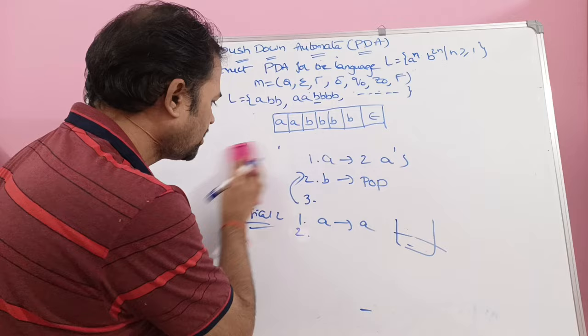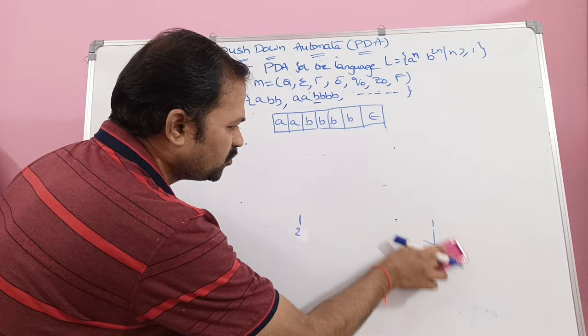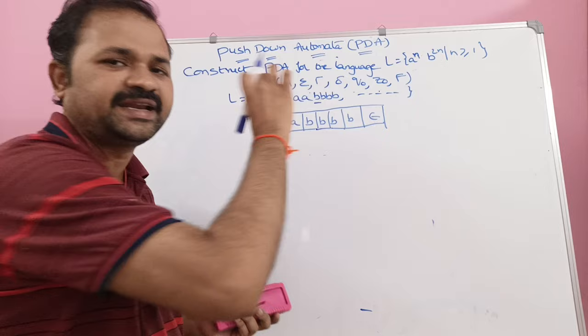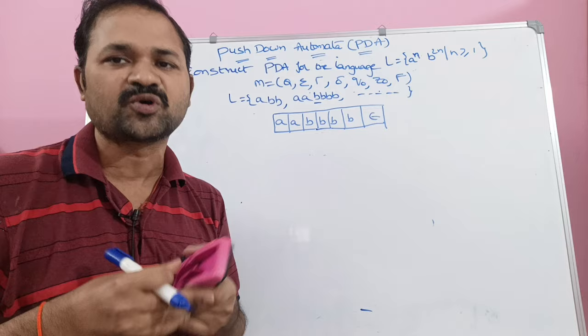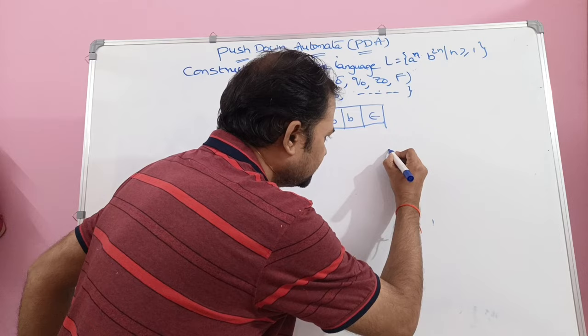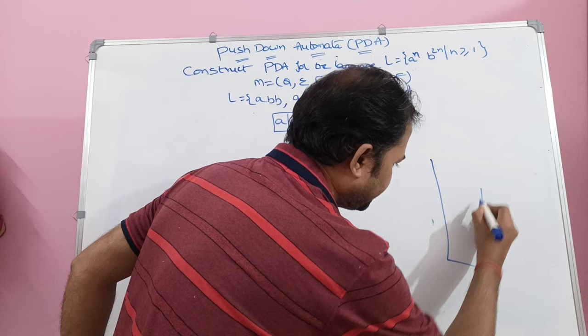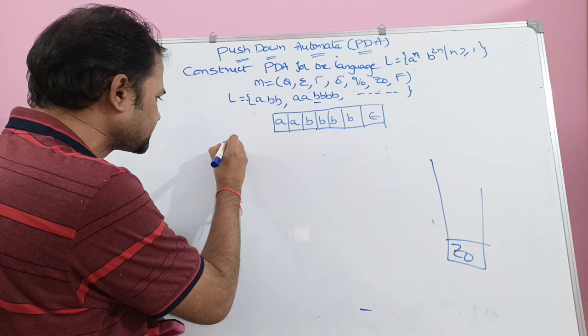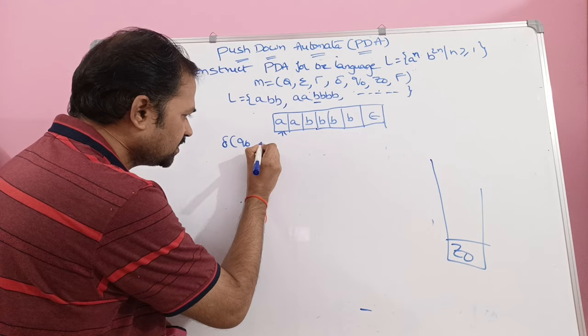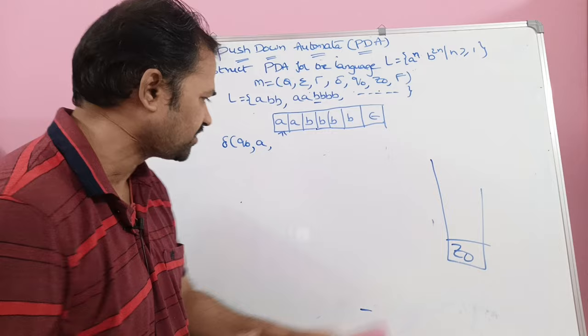Here I am implementing logic 1. Let us take the string aa bbbb. We know that an input string ends with epsilon, which specifies that the input string is completely read. Based on the input string, let us write the transition functions. Initially, let the stack contain z naught — so the top of the stack is z naught. The first transition function is δ(q naught, a, z naught): the first input symbol is 'a' and the top of the stack is z naught.